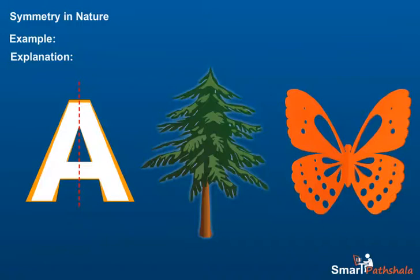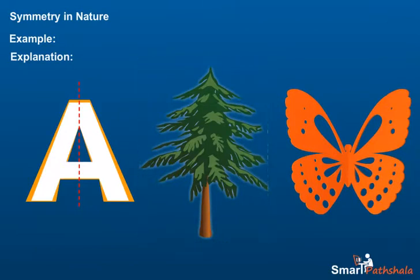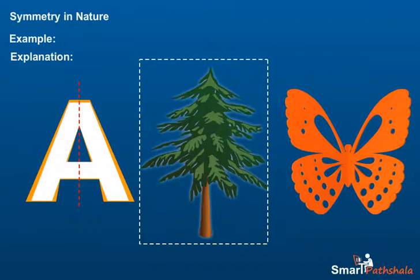Explanation 2: We try to find the line of symmetry in the figure. Since there is no line that divides the shape into congruent parts, the shape is not symmetrical. Explanation 3: We try to find the line of symmetry in the figure. Since the line divides the shape into congruent parts, they are symmetrical in nature.